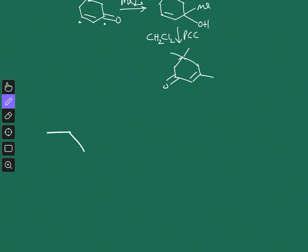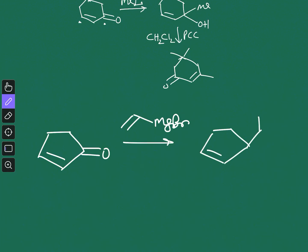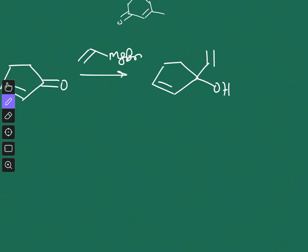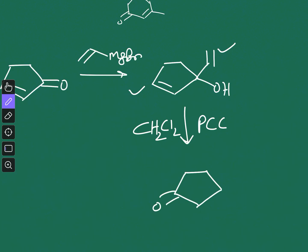The next example is particularly interesting. The substrate is first treated with vinyl magnesium bromide to give a tertiary allylic alcohol. When this is subjected to the Babler reaction, two rearrangement possibilities exist — on one side or the other. According to the textbook, rearrangement occurs on the more substituted side to give that as the major product. The explanation is not given in the book, so if you know why, please leave a comment.